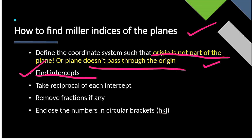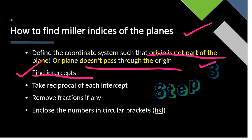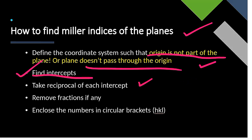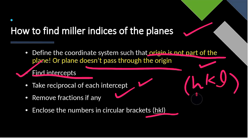Once you have calculated the intercepts you are good to go — the rest of the steps are simple and straightforward. The next step is to take the reciprocal of each intercept, then check if we have any fractions. If we do, we remove them, and the numbers we get are the final Miller indices, enclosed in circular brackets. The h index corresponds to x, the k index to y, and the l index to z.